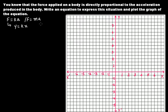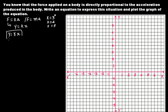Now, y = kx — you cannot plot the graph until you know the value of k. Since we have not been given the value of k, let's assume k = 3. So our equation becomes y = 3x.